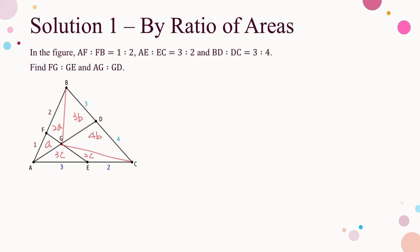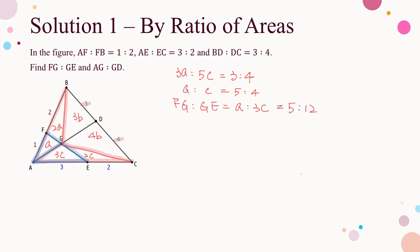Due to the same base, ratio of area equals ratio of height, so area of AGB to area of AGC equals 3 to 4. That is, 3A to 5C is 3 to 4, thus A to C is 5 to 4. As the ratio of FG to GE is the same as the ratio of the areas of triangles AGF and AGE, we have FG to GE is 8A to 3C. Substituting the ratio A to C gives 5 to 12 — the answer of the first ratio.